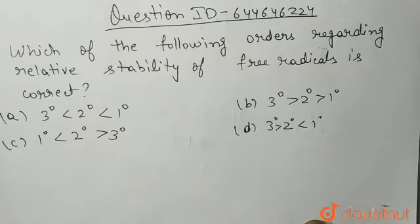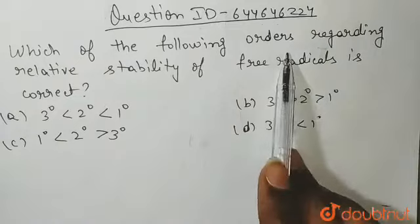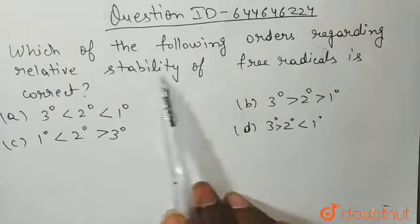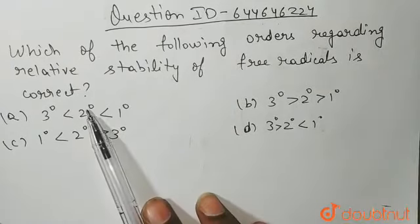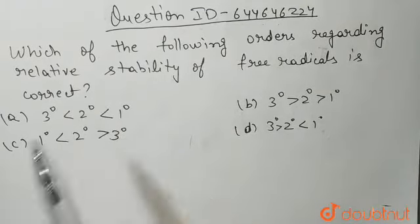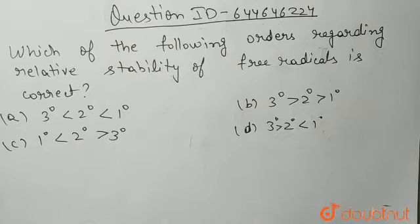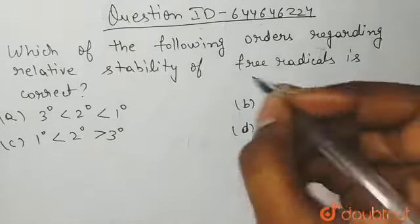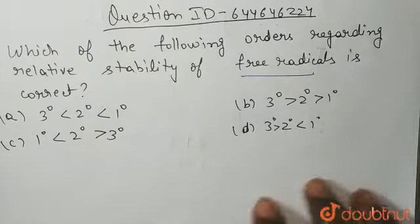Hello students, the question is: which of the following orders regarding the relative stability of free radicals is correct? We need to tell which one, out of all four options, is the correct order for the stability of free radicals.